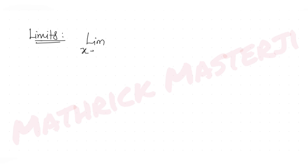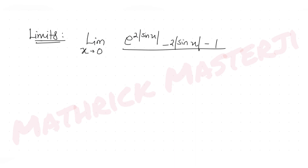Hi guys, I hope you are all doing well. Today's question is from the topic of limits. We need to find the value of a limit as x approaches 0, where the expression is e raised to 2|sin x| minus 2|sin x| minus 1, all divided by x squared.